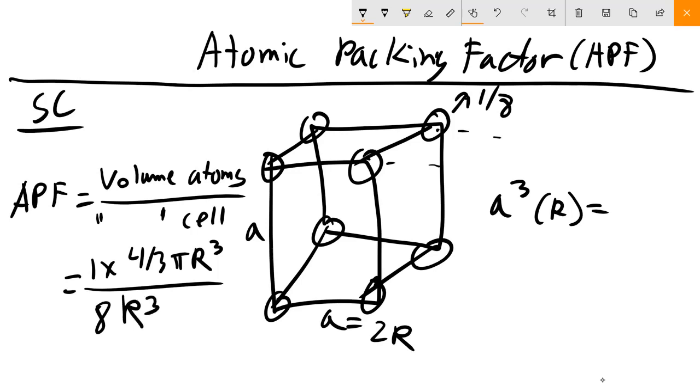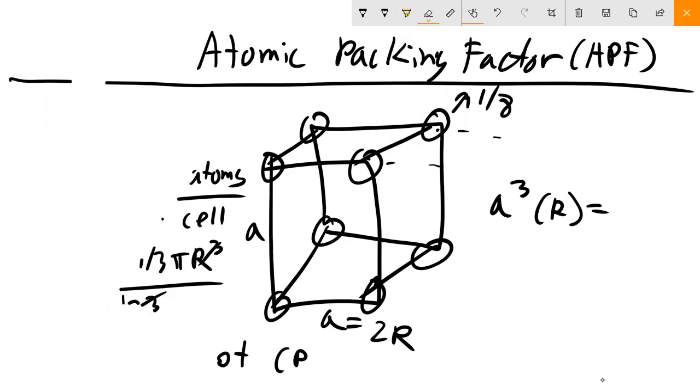We know that for simple cubic, this distance is equal to 2R. The nearest neighbors are touching, so that's just going to be 8R cubed. Those cancel, and we end up with an APF equal to pi divided by 6. That is not a close-packed structure.